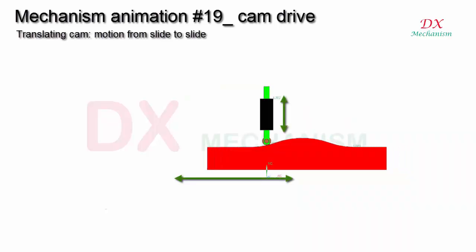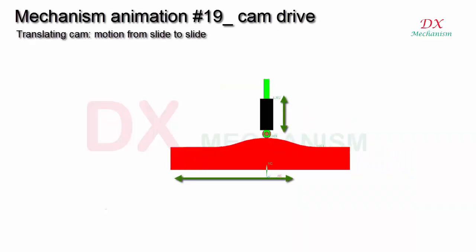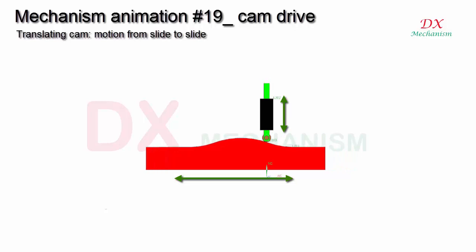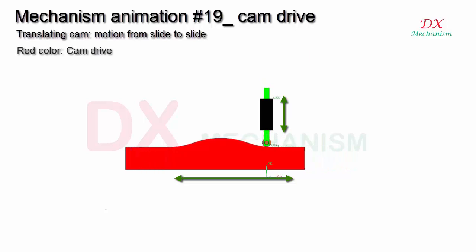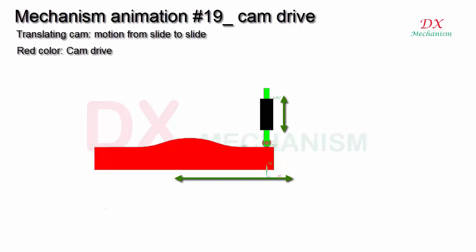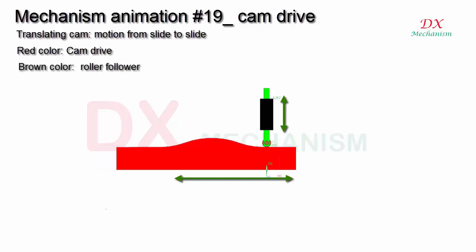Mechanism Animation Number 19: Cam Drive. Translating cam — motion from slide to slide. Red color: cam drive. Brown color: roller follower.